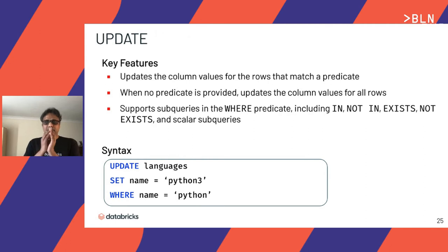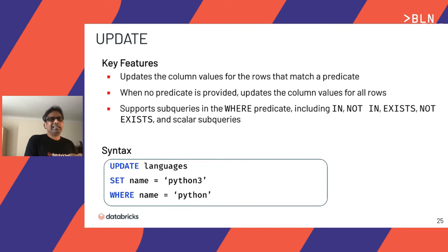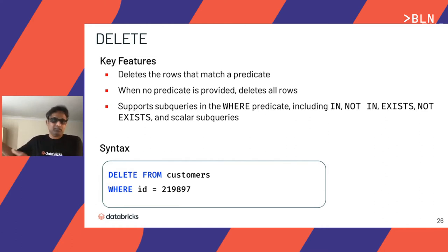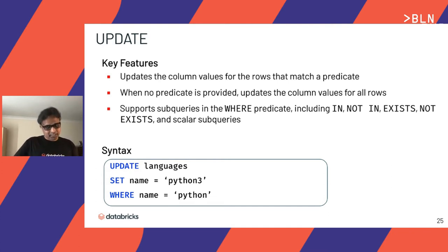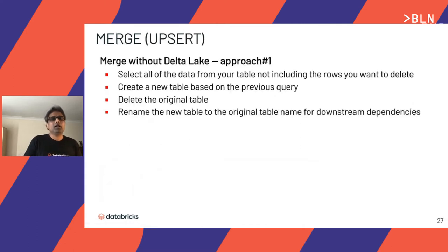The UPDATE syntax on a Delta table looks almost exactly like an RDBMS query: 'UPDATE table SET column = value WHERE condition.' If no predicate is provided, it updates all rows. Similarly for DELETE: 'DELETE FROM table WHERE condition.' Without a predicate, it deletes all rows.